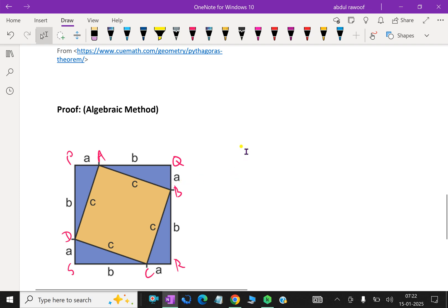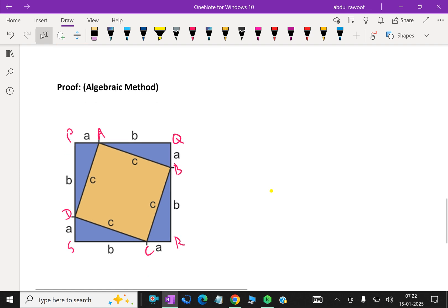Now first consider the four blue triangles here. We know that all triangles formed here are congruent triangles, that means all equal in shape. What is this triangle's area? Triangle's area is base into height, half into base into height.